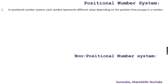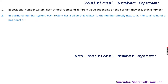In a positional number system, each symbol represents a different value depending on the position it occupies in the number. Each number has a value related directly to the numbers next to it. The total value of a positional number system is the total of the resultant values of all positions — like how '1' can stand for 100, which is a positional place value.